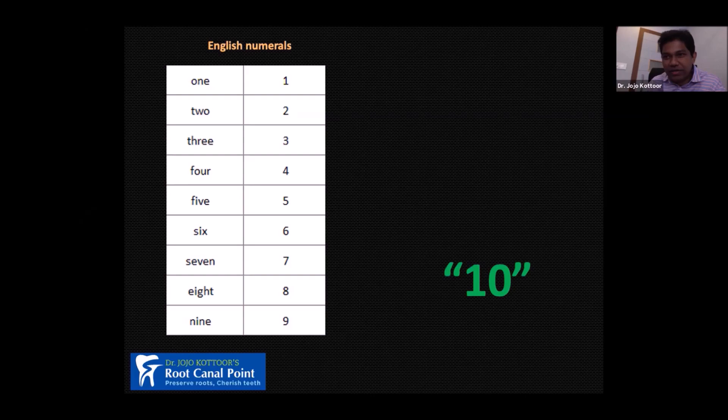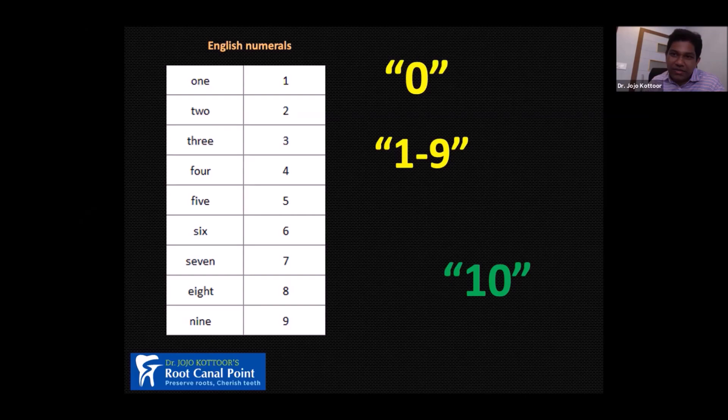You may be wondering why I'm saying this in a root canal anatomy presentation. I would like to compare zero as root canal anatomy and numbers one to nine as the various steps in root canal treatment. What I've realized over time is that people, researchers, clinicians, and academicians are focusing more on steps of RCT — from access opening to irrigation to obturation — but are not properly understanding the impact of root canal anatomy.